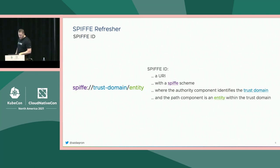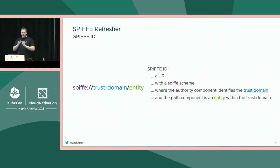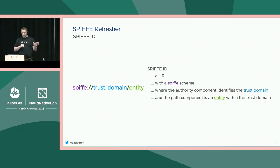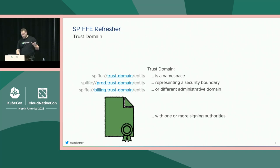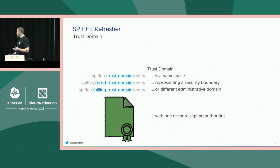At the heart of SPIFFE is something called the SPIFFE ID. This is your username for your service, your workload — it's your identity. It's a URI, very basic. It's got basically two parts to it: you've got a trust domain part and you've got an entity part within that trust domain. The trust domain is essentially acting as a namespace for these entities. It represents a security boundary or maybe a different administrative domain.